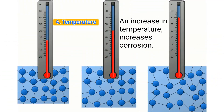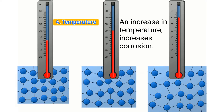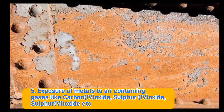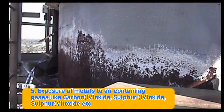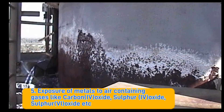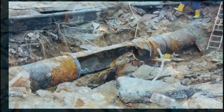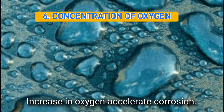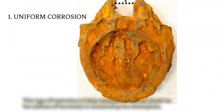Four, temperature — an increase in temperature increases corrosion. Five, exposure of metals to air containing gases like carbon dioxide (CO₂), sulfur dioxide (SO₂), and sulfur trioxide (SO₃). Six, concentration of oxygen — an increase in oxygen accelerates corrosion.